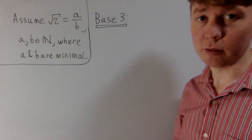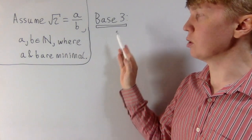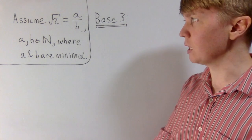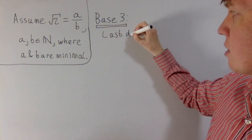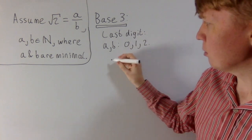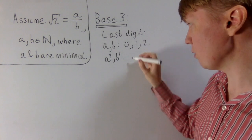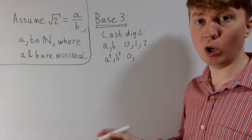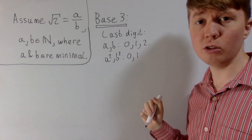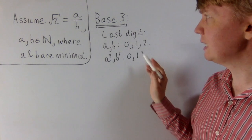Now we'll go back to base 3 for a slightly different proof. Here we assume not only that root 2 is rational, but that we've expressed it with a and b as small as possible — a simplified fraction. Instead of looking at the last non-zero digit, we'll look at the last digit of a and b in base 3. The last digit can be 0, 1, or 2. When we square: ending in 0 stays 0; ending in 1 stays 1; ending in 2 gives 2²=4, which ends in 1 in base 3. So the only possibilities for the last digit of a square in base 3 are 0 or 1.